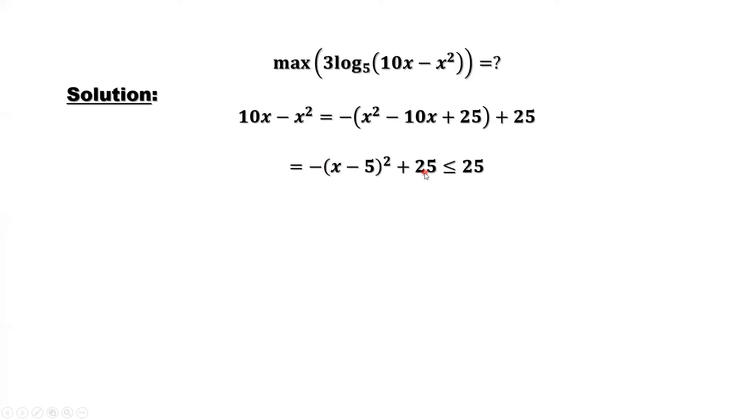The whole thing plus 25. We have this result: 10x minus x squared less than or equal to 25. The maximum value for 10x minus x squared is 25 when x equals 5, and this result is 0.